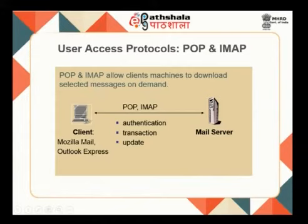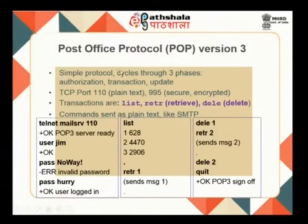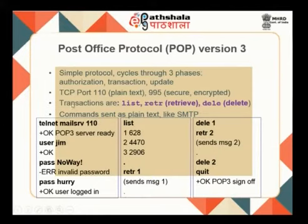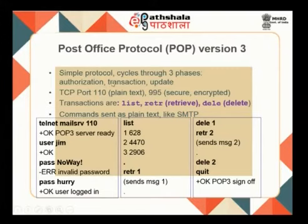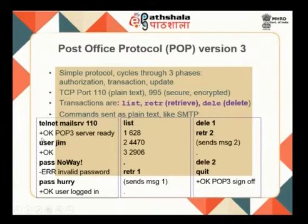Normally there is some kind of authentication so the server knows it is an authorized client trying to access the data, then a set of transactions can take place, and then an update is done. These three phases — authentication, transaction, and update — occur when data is transferred between the client and the mail server through either POP3 or IMAP. The POP protocol — Post Office Protocol — we use version 3, so it is called POP3. It is a very simple plain-text message protocol and it works on TCP port number 110. For a secure version of POP3, port number 995 is used.